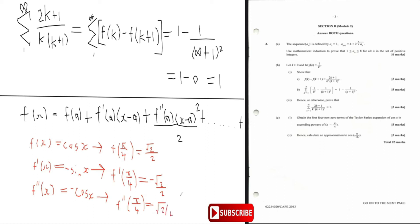Finally, f triple prime of x: when you differentiate minus cos you get sine x. So f triple prime of x equals sine x, and f triple prime of pi by four equals root two over two.